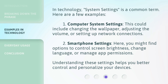In technology, system settings is a common term. Here are a few examples. First, computer system settings — this could include changing the wallpaper, adjusting the volume, or setting up network connections. Second, smartphone settings — here you might find options to control screen brightness, change language, or manage app permissions. Understanding these settings helps you better control and personalize your devices.